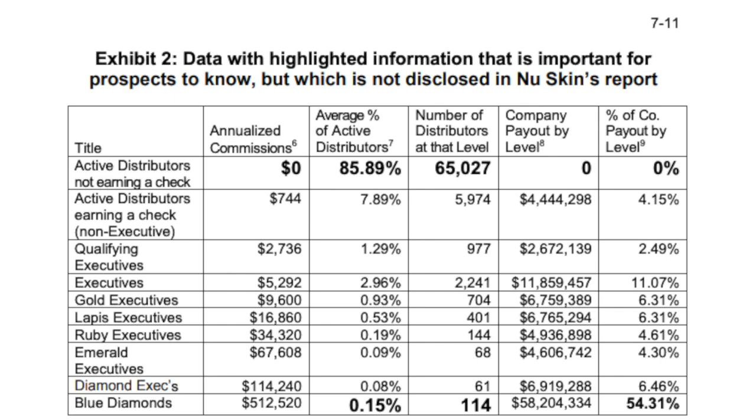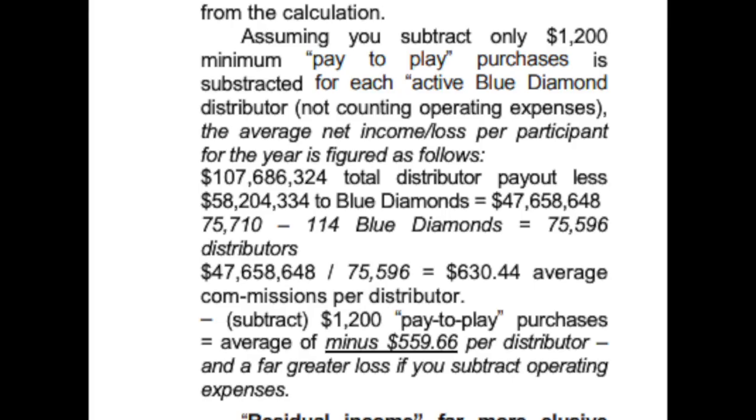The top dogs earn the lion's share of commission, and down at the bottom, you earn very little. Here, the author details that a better number would be to actually remove the blue diamond commission structure to see the average payout for everyone else, and he comes to the conclusion that it would be minus $559.66 per distributor, and it's a far greater loss if you subtract operating expenses.